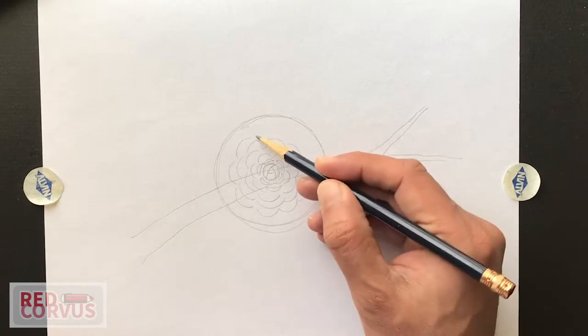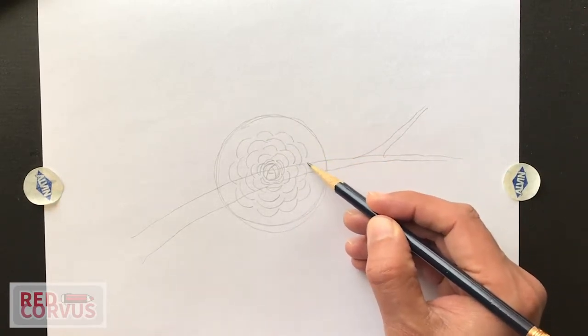Now this shape doesn't have to be perfect. But again, the closer you get to a circle, the better the flower will look.